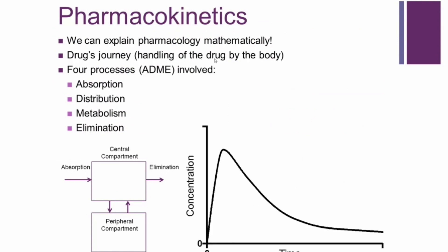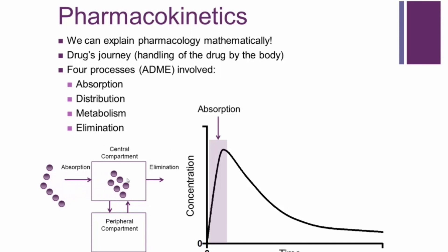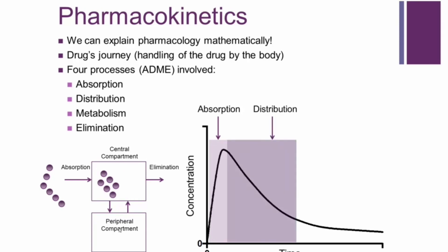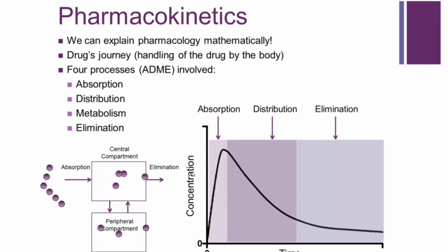Pharmacokinetics allows us to explain the pharmacology of the drug mathematically. It's basically the drug's journey through the body and how the drug is handled by the body. There are four basic processes to pharmacokinetics, called ADME: absorption, distribution, metabolism, and elimination. When a drug is dosed — either orally or IV — it goes into the central compartment, which is the absorption phase. It then goes into the peripheral compartment, which is the distribution phase. And lastly the drug is eliminated, which is the elimination phase.